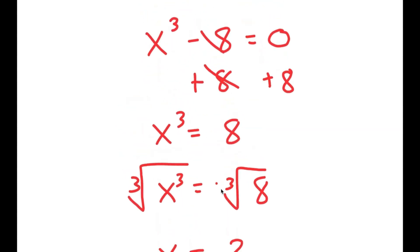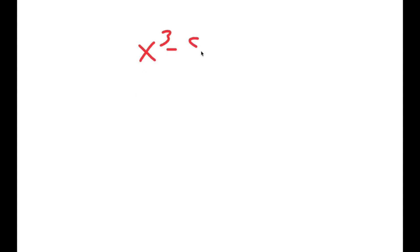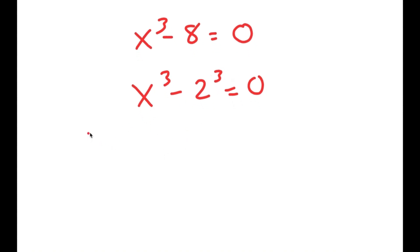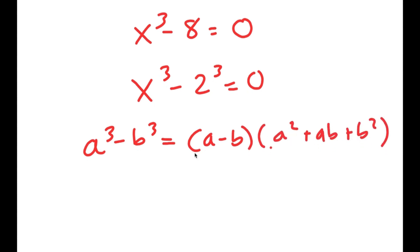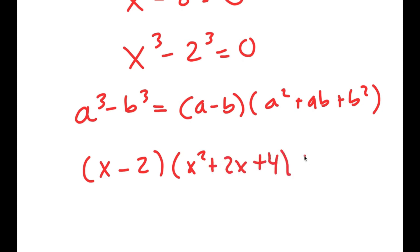But actually, there are more than one solution to this equation. So I'm going to rewrite my equation: x³ - 8 = 0. Now I'm going to rewrite 8 as 2³, so I get x³ - 2³ = 0. Then I'm going to use the formula a³ - b³ = (a - b)(a² + ab + b²). So in this case, this turns into (x - 2)(x² + 2x + 4) = 0.